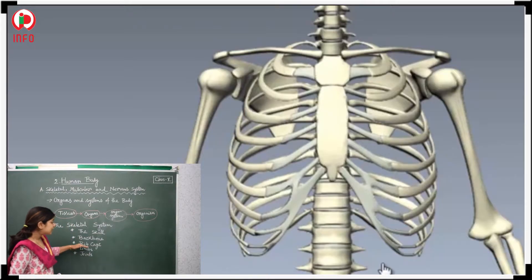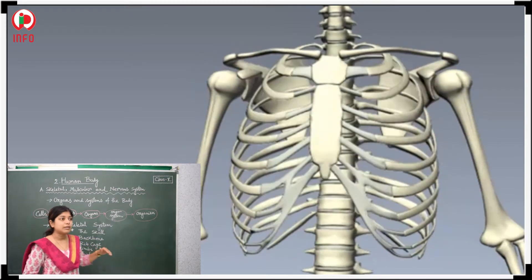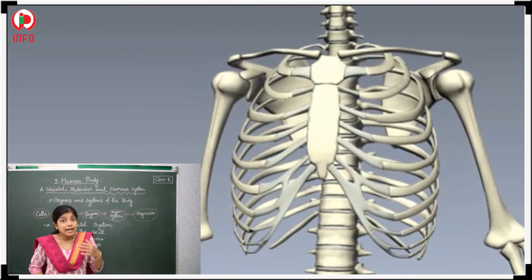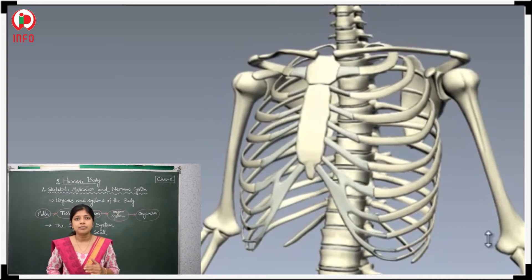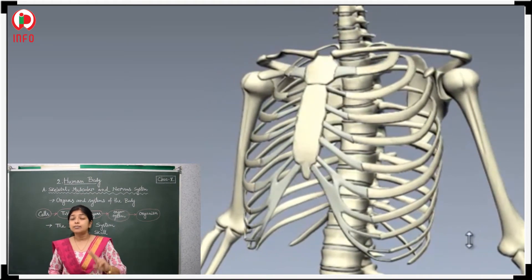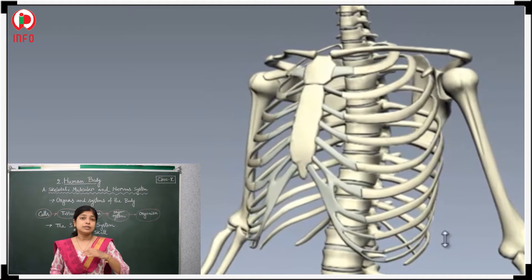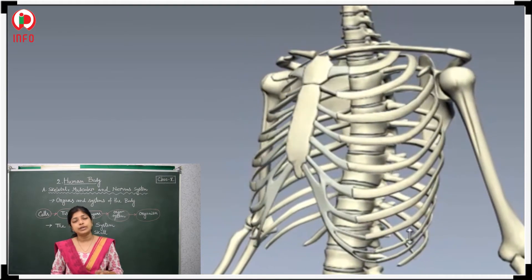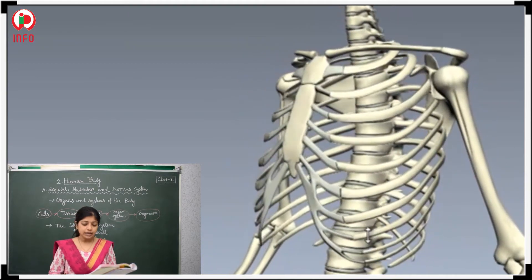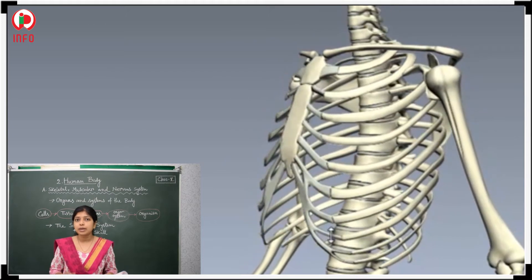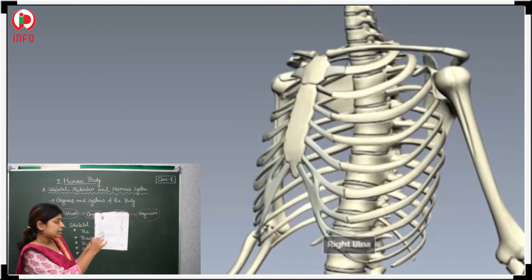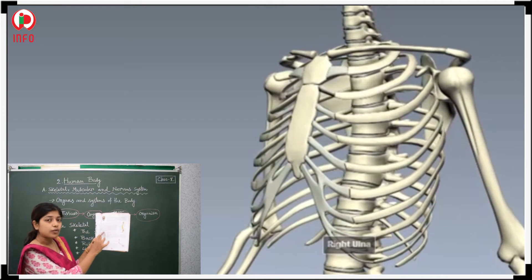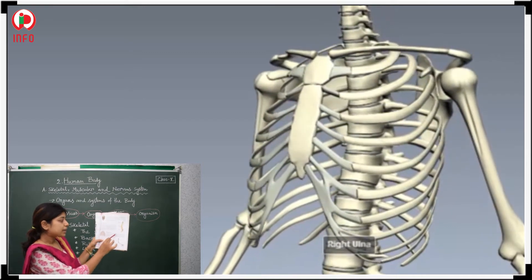Have a look at the ribcage. After listening to the name, you are able to understand it is a cage-like structure. It is a cage-like structure consisting of different bones — 12 pairs of bones. Look at this picture. This is a cage-like structure, and all of you are able to see 12 pairs are there.